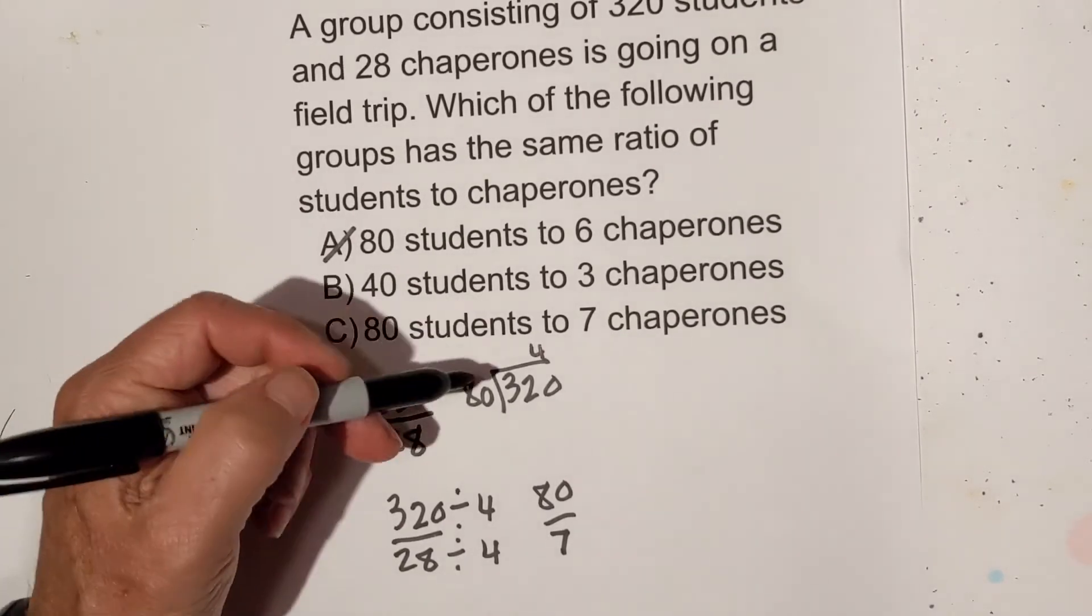So now let's look at the next one. Another way you could look at this is you know that 80 goes into 320 four times. So what you can do is you can take 80 over 6, multiply both of these by 4 and it has to equal 320 over 28. Well the first one 80 times 4 is 320 but 6 times 4 is 24. So again that is incorrect.